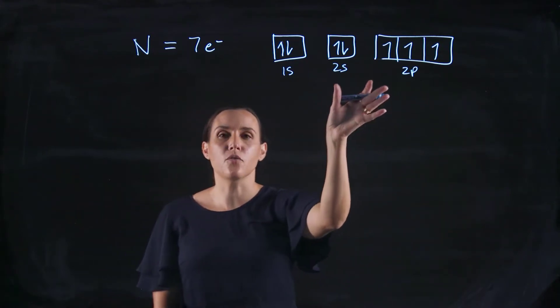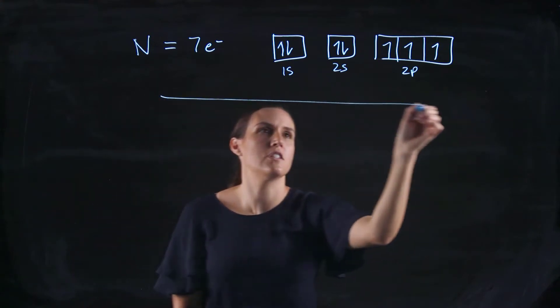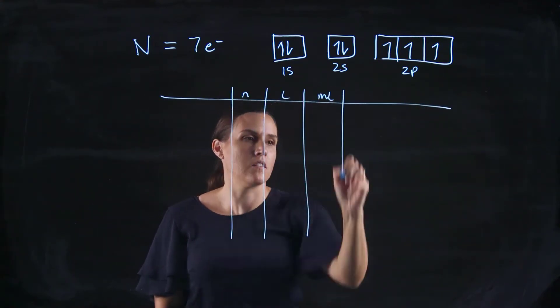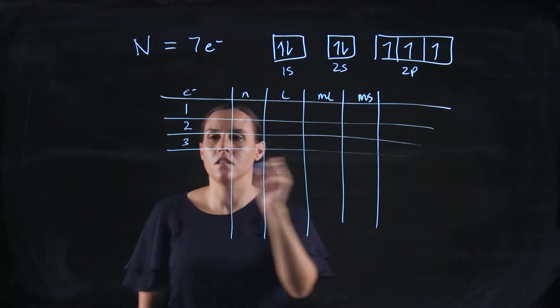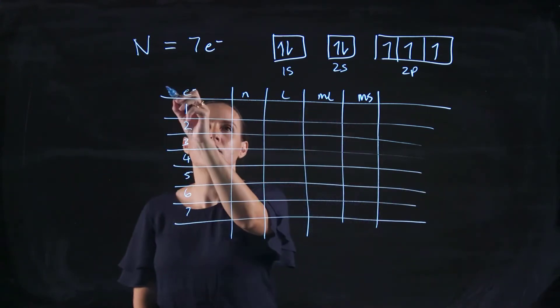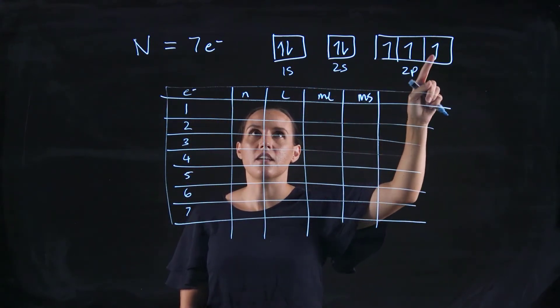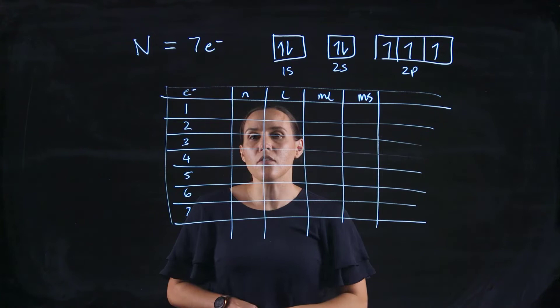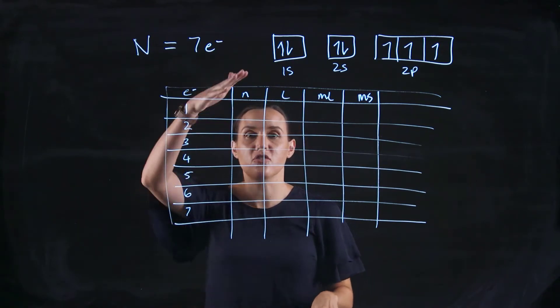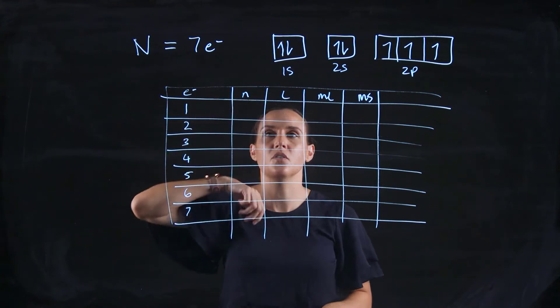Now changing from the orbital diagram into the quantum numbers. Let's draw a table. There's a little quick grid. We're looking at these seven electrons. Now that I've got my orbital diagram there, I can read straight off that orbital diagram and draw it straight in for the quantum numbers.